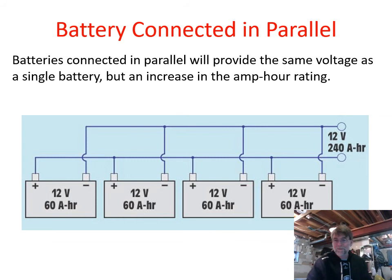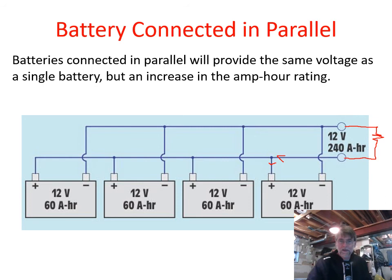By Kirchhoff's Current Law, the four batteries share the load. Whatever the resistive load is, whatever current is demanded from the power supply gets shared. The total current coming in splits — one quarter goes to each battery — so the four batteries share the current load of the circuit. Therefore, it lasts four times as long.